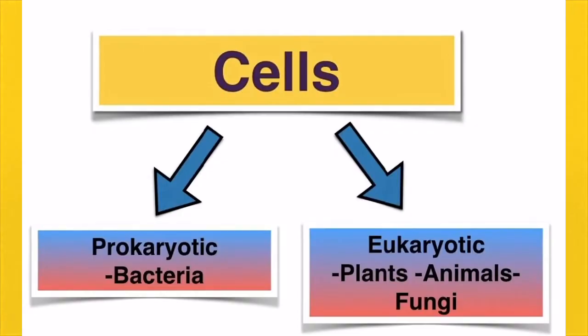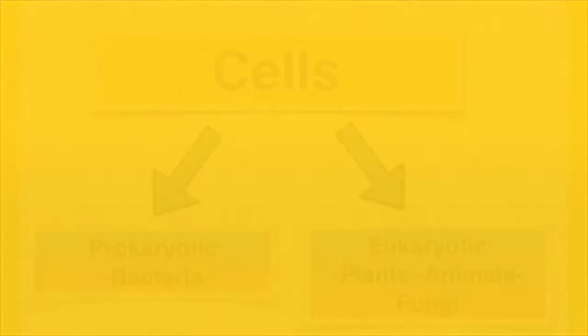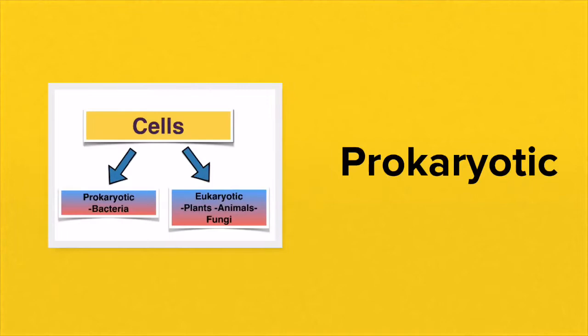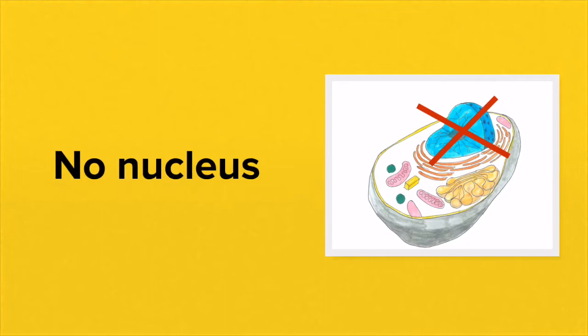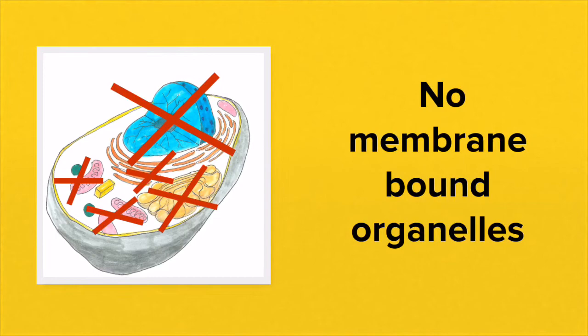Cells are usually split into two categories. The first category is known as prokaryotic cells. Bacteria are the best example of prokaryotic cells. The first feature of prokaryotic cells is that they do not have a membrane-bound nucleus — they don't really have a true nucleus.